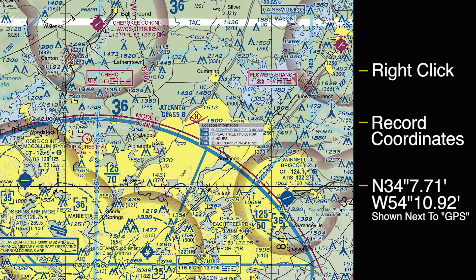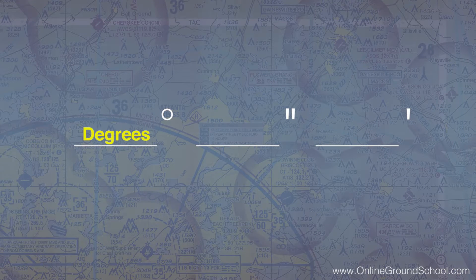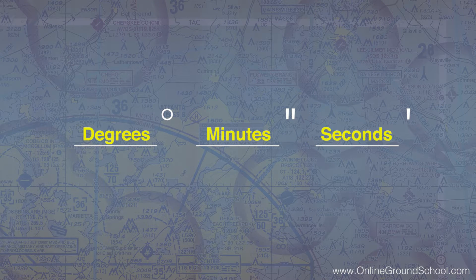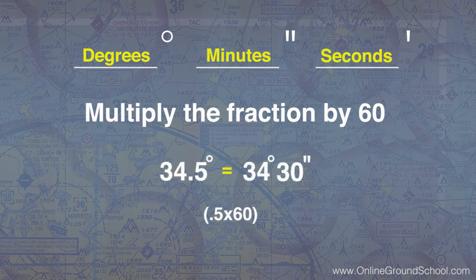We're almost there. This will require a quick calculation to put into any FAA application form, but it's an easy process. All coordinates need to be in the form of degrees, minutes, and seconds, and the conversion is super easy — just multiply the fraction by 60. So 34 degrees 0.5 would actually come out to 34 degrees and 30 minutes.